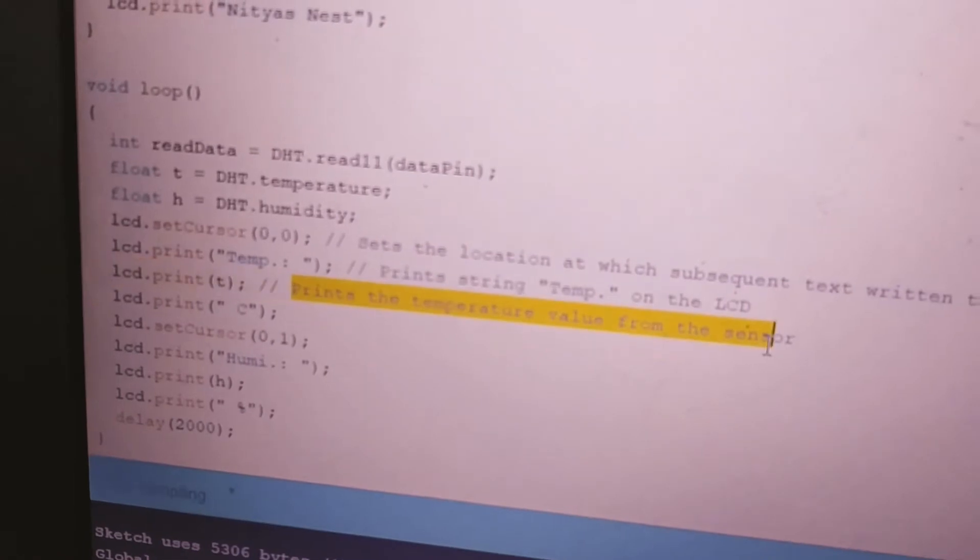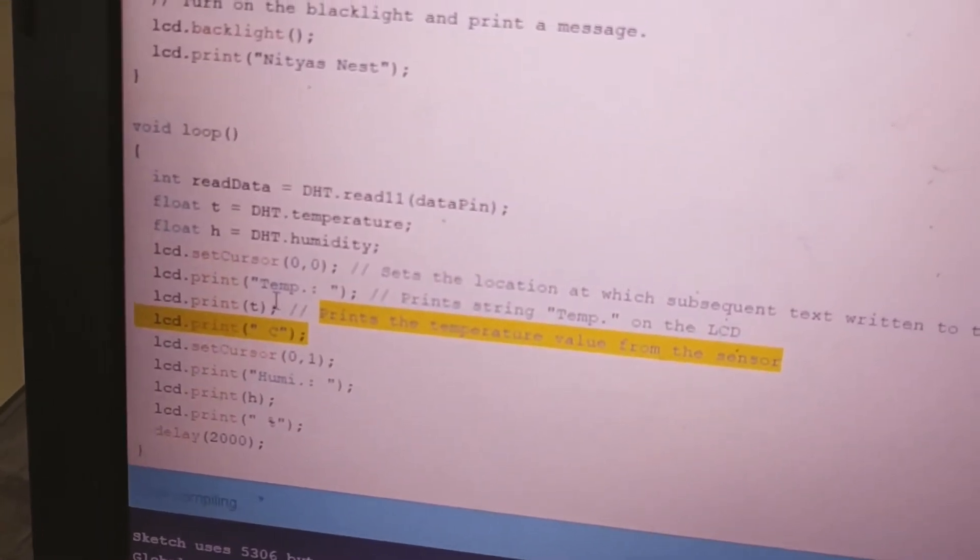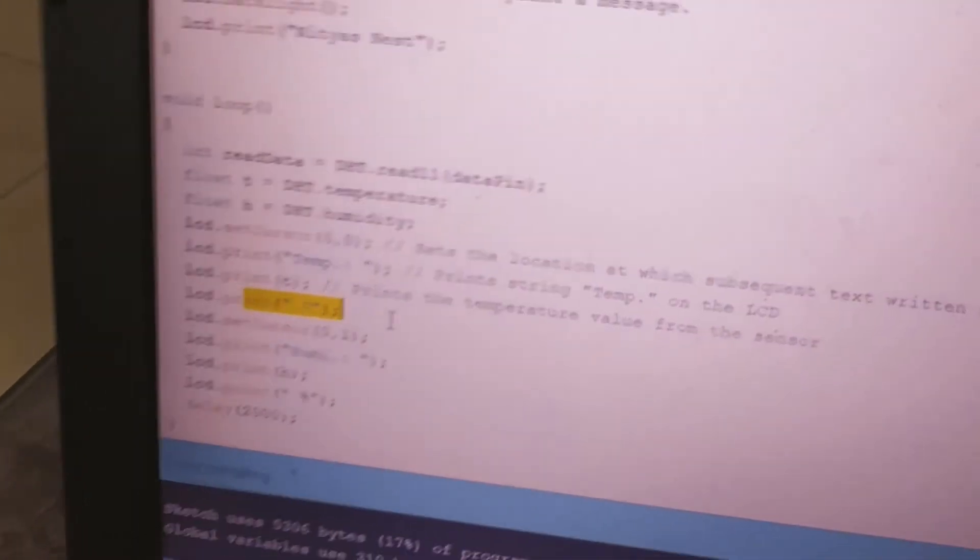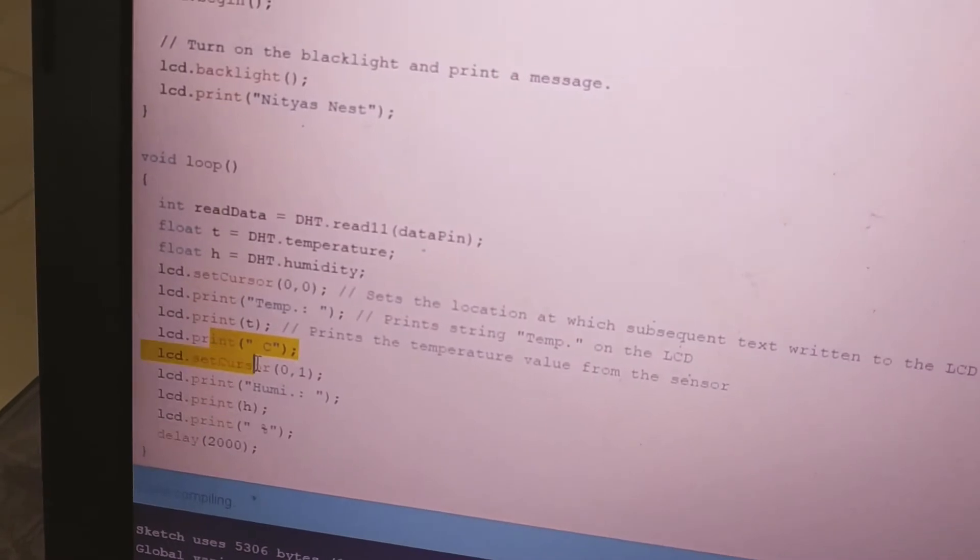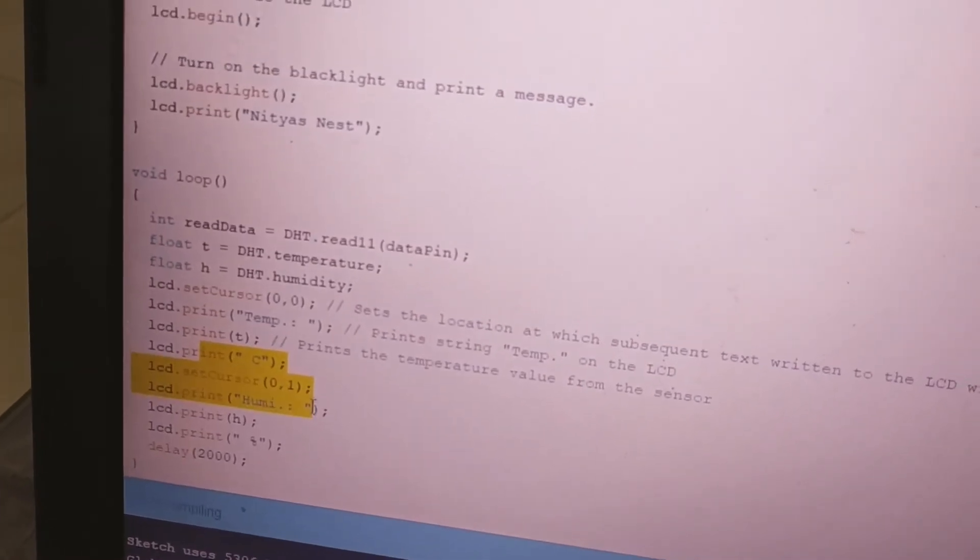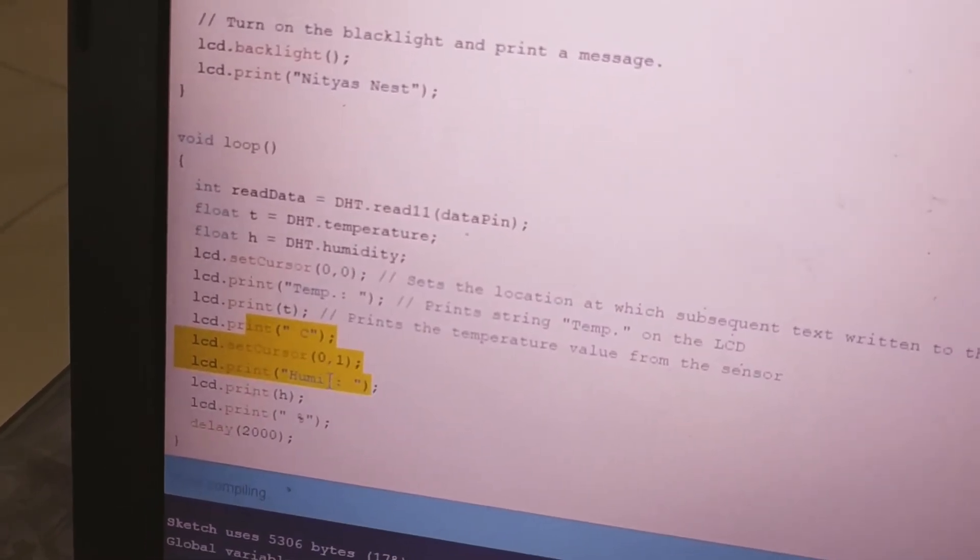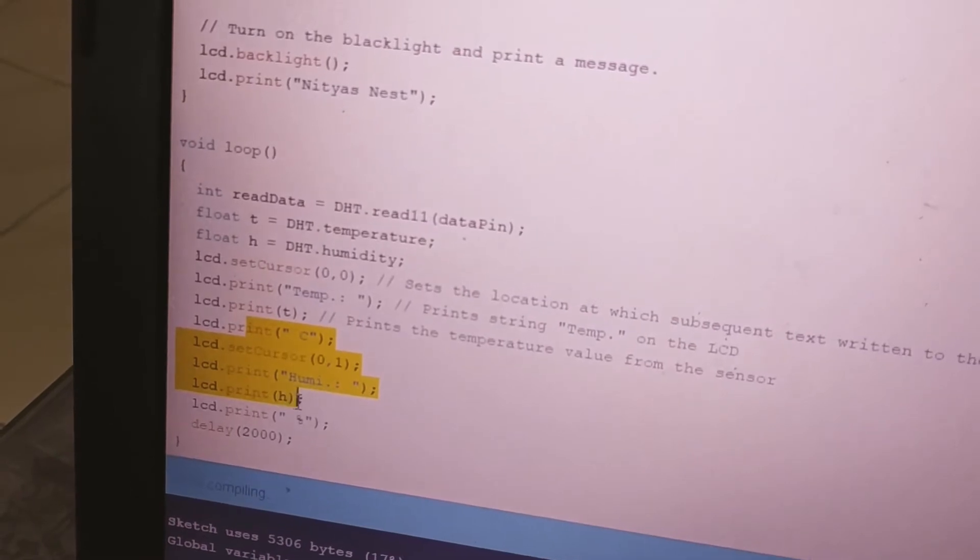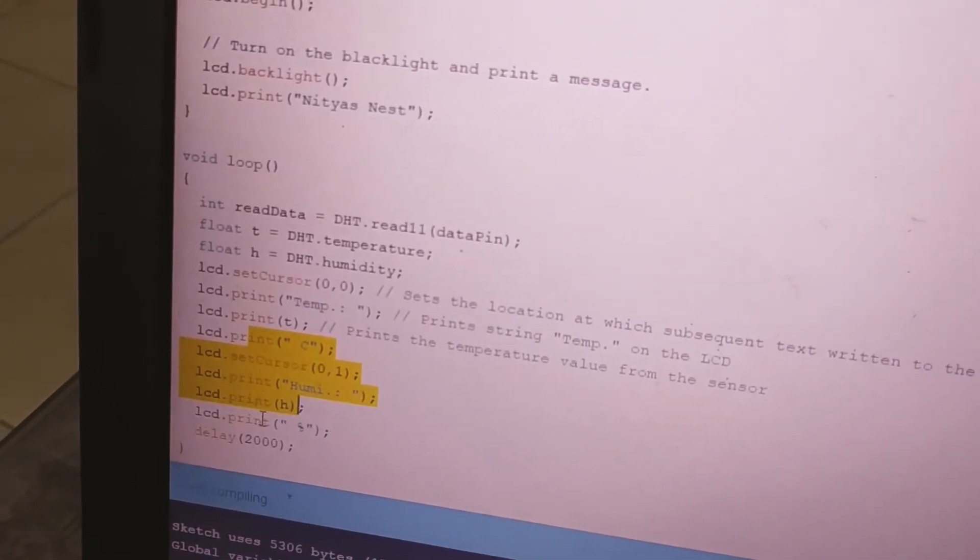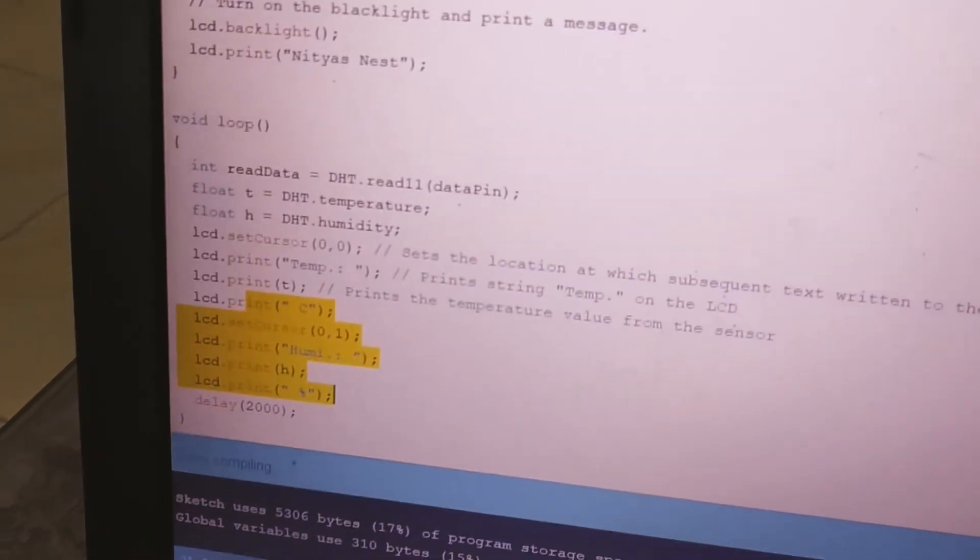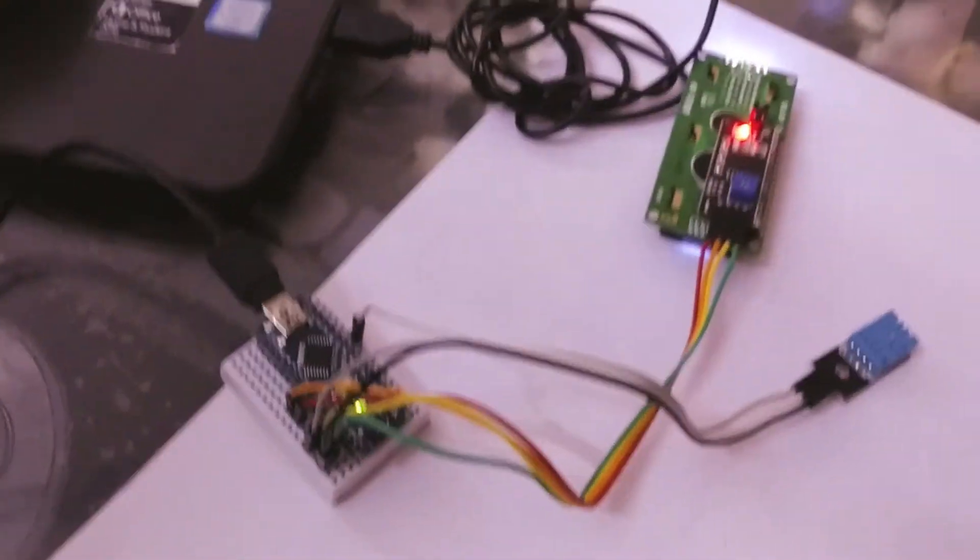This prints the temperature value from the sensor. After that it's showing C for Centigrade. If you want to write something in the second line, you have to write 0,1. In the second line we are writing 'Humi' for humidity, and this is the variable. Then after that, the percentage sign. That's it. Now let's compile and upload the code.